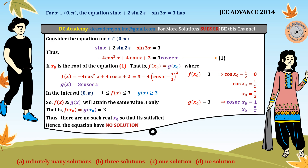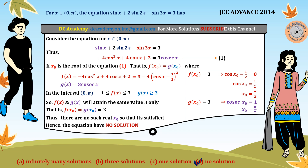Therefore the given equation has no solution, and the correct option is option D. The key insight is that we didn't solve this as a normal equation — we used graphical interpretation and range analysis to reach the conclusion. That's what makes this problem very interesting.